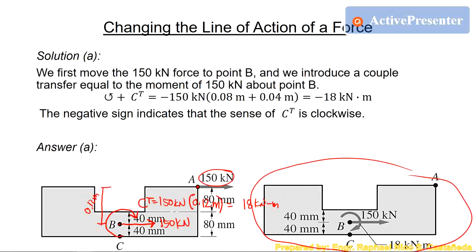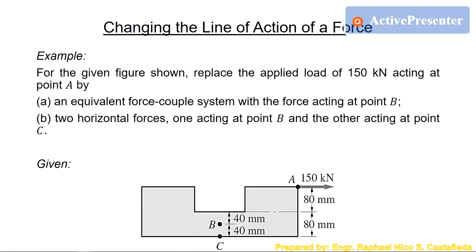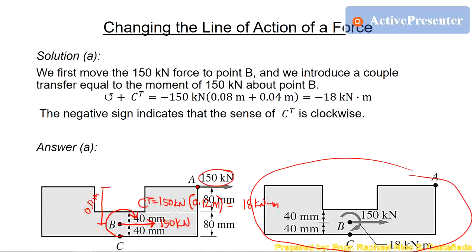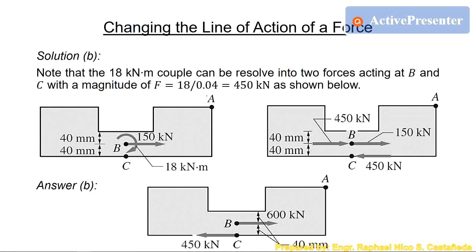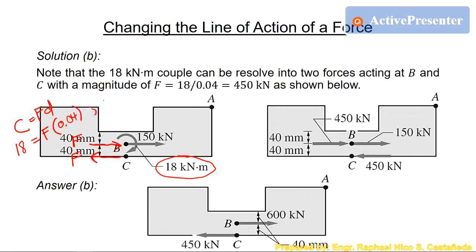For letter B, we want to replace the original system with two horizontal forces, one acting at point B and the other at point C. We will use the answer from letter A — the equivalent force couple system acting at B — and replace the 18 kN·m couple with two forces. These two horizontal forces will produce a couple of 18 kN·m. So 18 kN·m equals force times the distance between the two forces, which is 40 mm or 0.04 m. Solving for the force gives 450 kN.